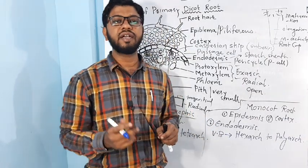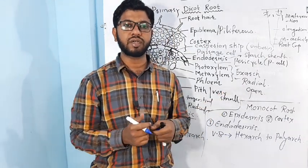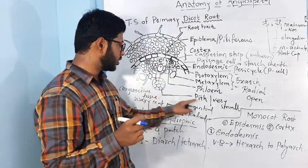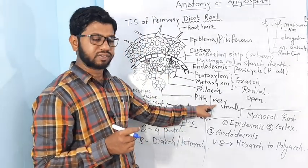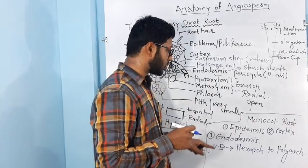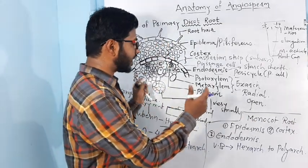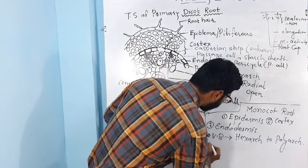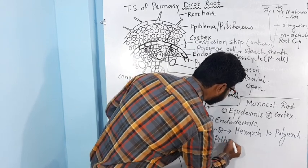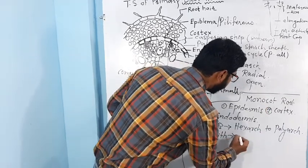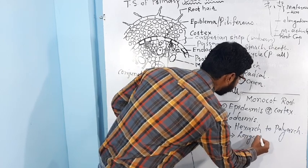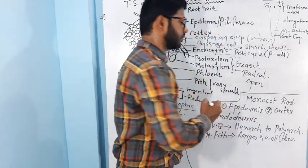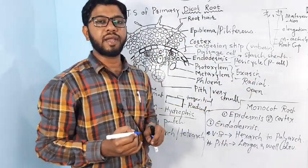The next difference between dicot root and monocot root is that in dicot, pith is very small and inconspicuous, whereas in monocot root, pith is very large and conspicuous. The first difference is in vascular bundles, the second difference is in the pith. In monocot root, pith is larger and conspicuous, that is, well-developed. These are the main differences.